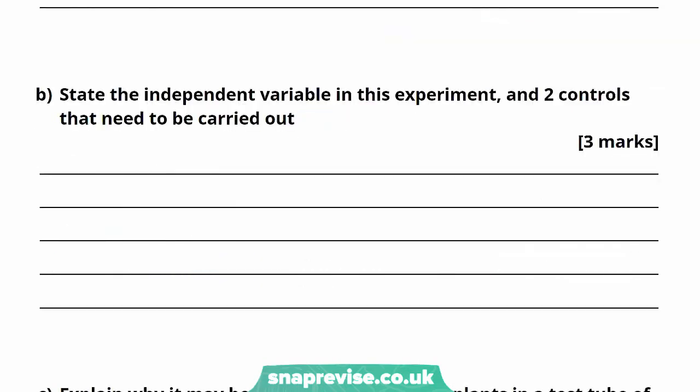So that was Part A. Part B says to state the independent variable in this experiment and two controls that need to be carried out. It's always a good idea to know for every experiment what the independent variable is, the dependent variable, and the controlled variables, and to know the difference between them.